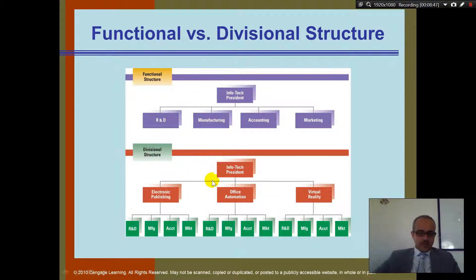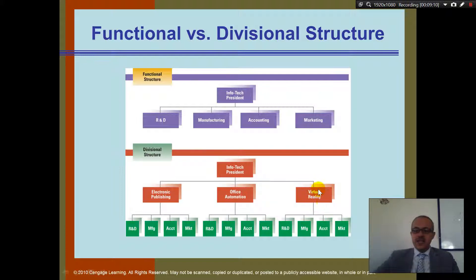Looking at a diagram: here we have a functional company called Infotech with a President and departments of R&D, Manufacturing, Accounting, and Marketing. And here we have a divisional structure with divisions for Electronic Publishing, Office Automation, and Virtual Reality — each having their own functions underneath. So the marketing for Virtual Reality is completely separate from the marketing for Office Automation and Electronic Publishing.